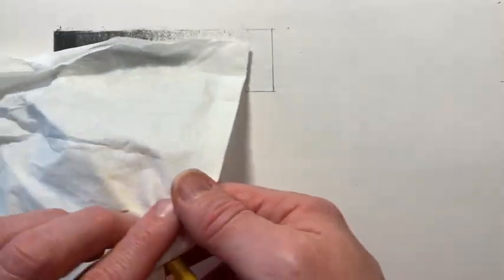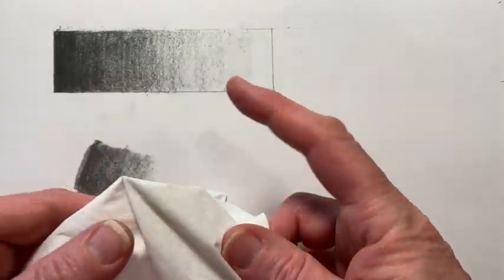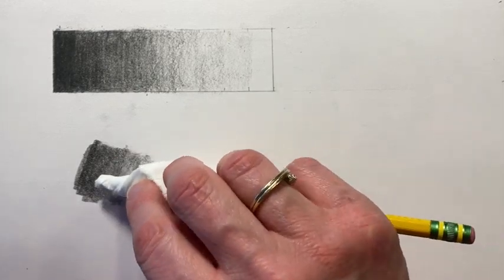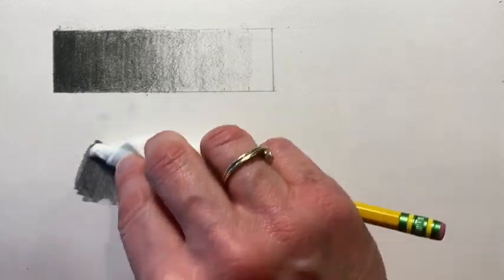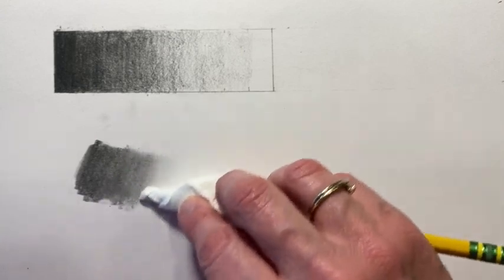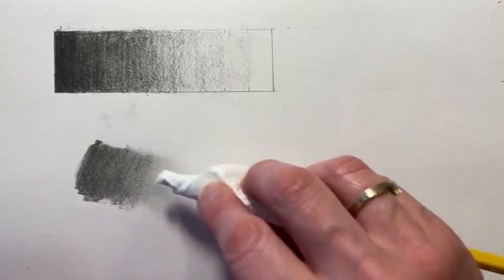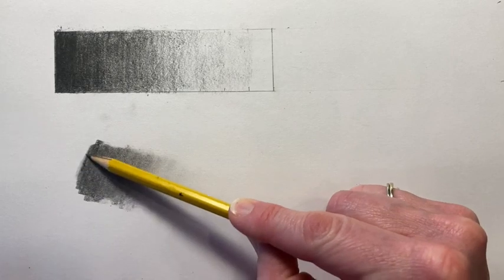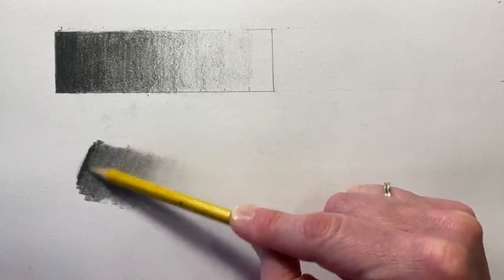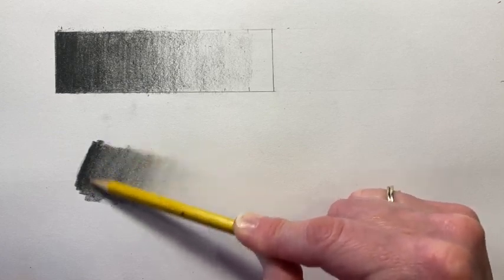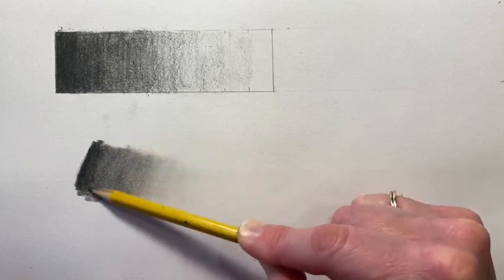Some people use blending stumps. I never grew up with those. I used to always just wrap a Kleenex around my pencil and use that as a blending stump. This is my preferred method even still today. When you blend with a blending stump or with the Kleenex, it just leaves a really smooth area. And then I go back over the really dark area. You don't want to blend that completely out because then you miss that last tone.